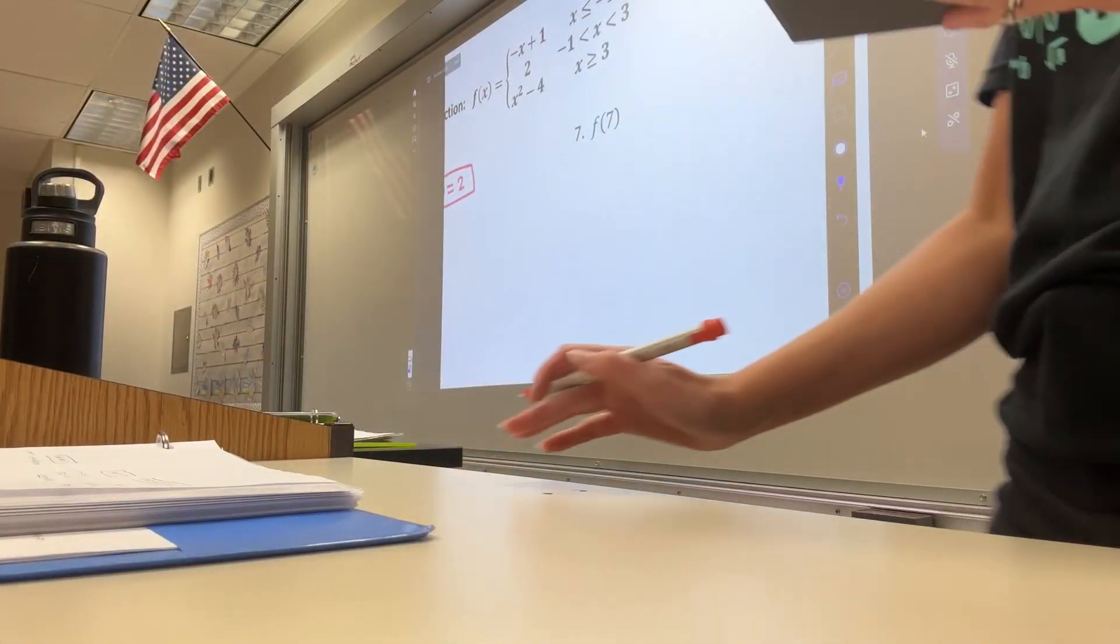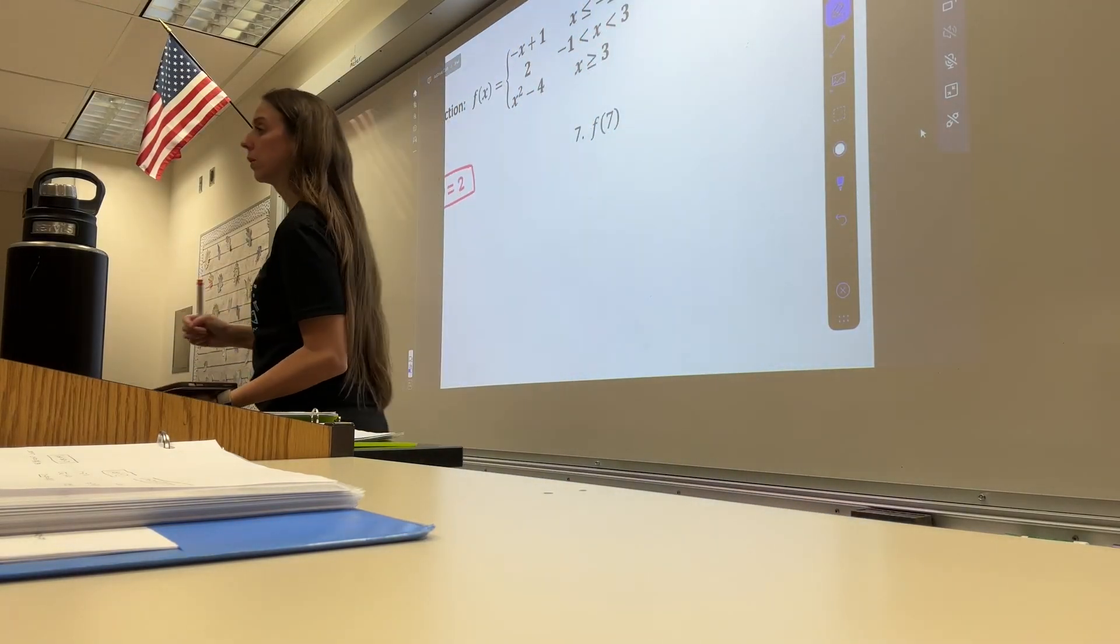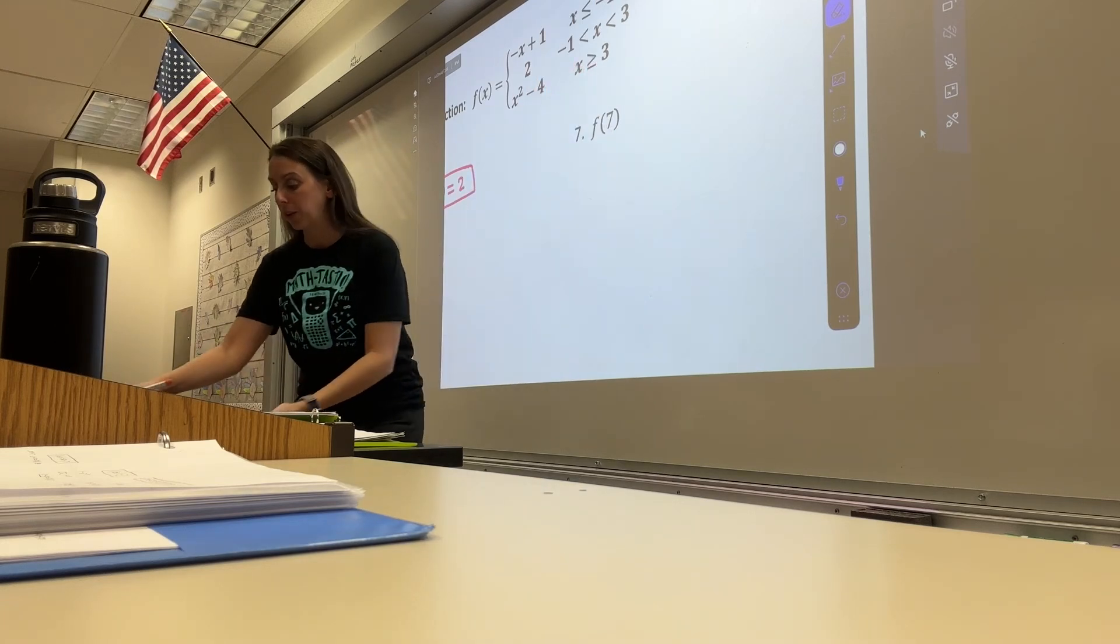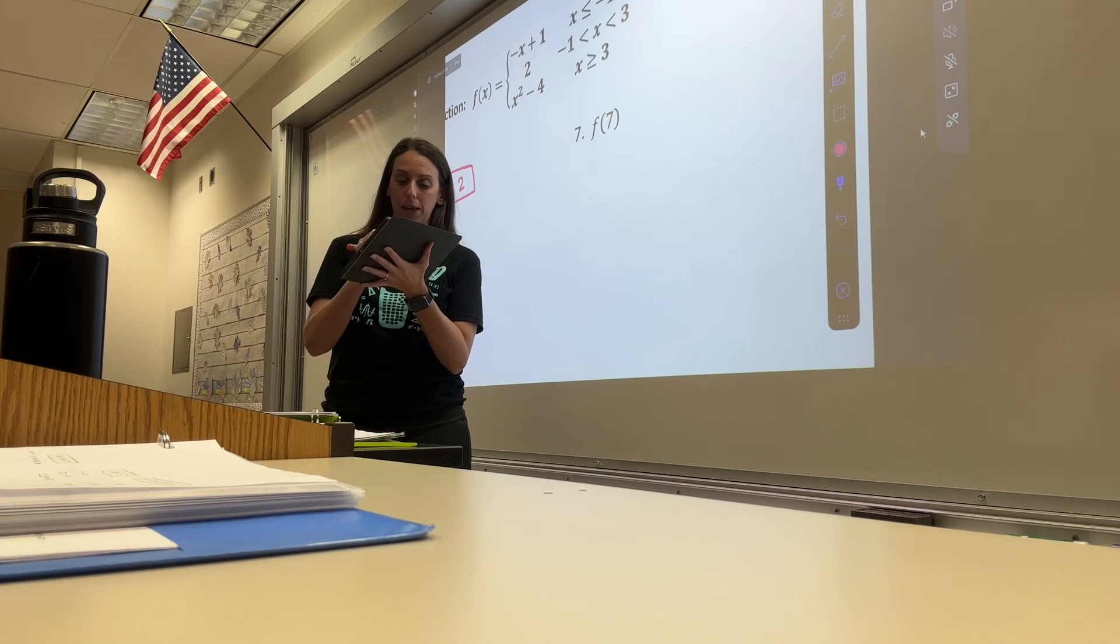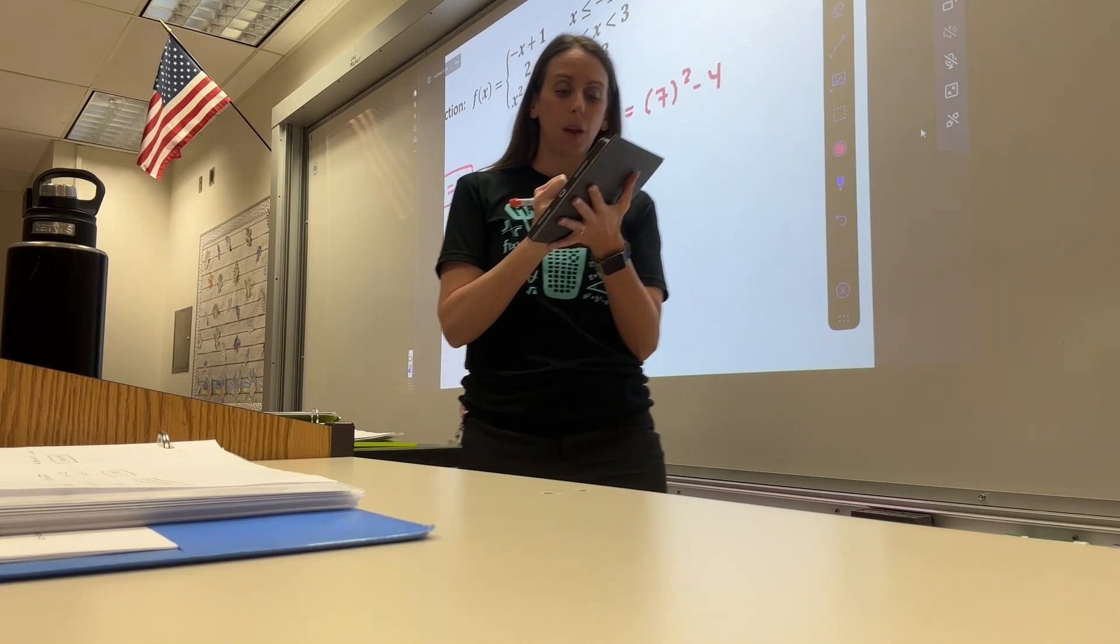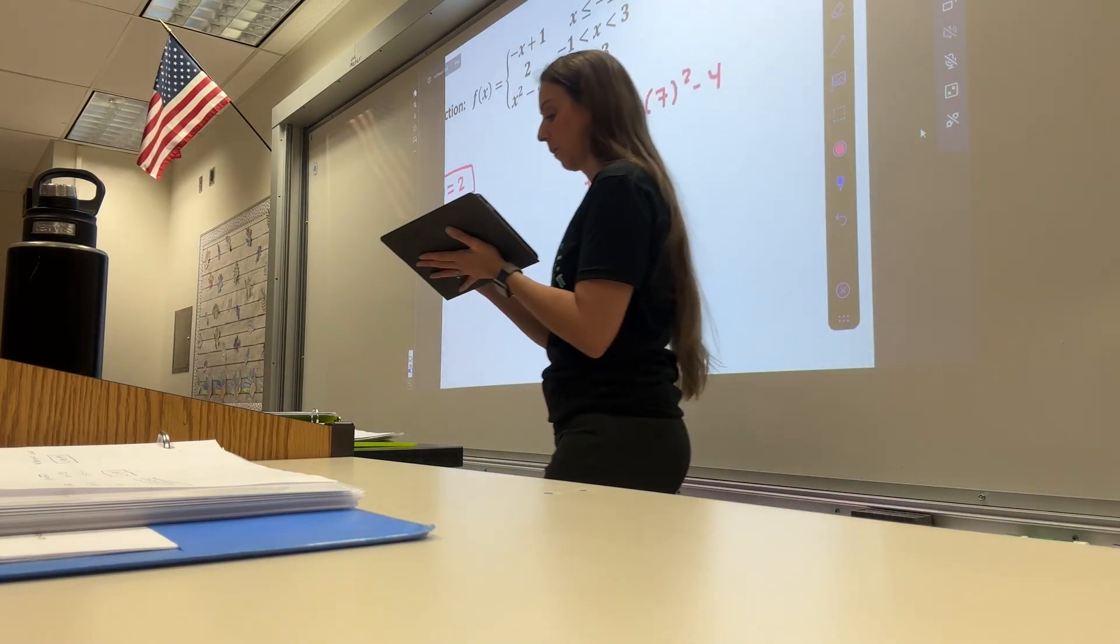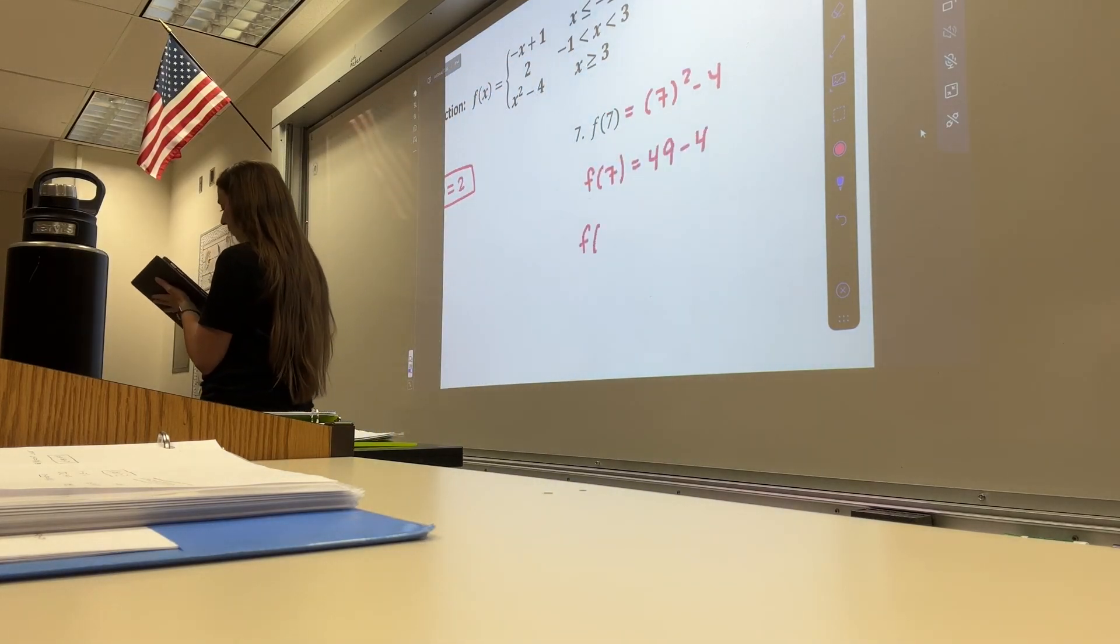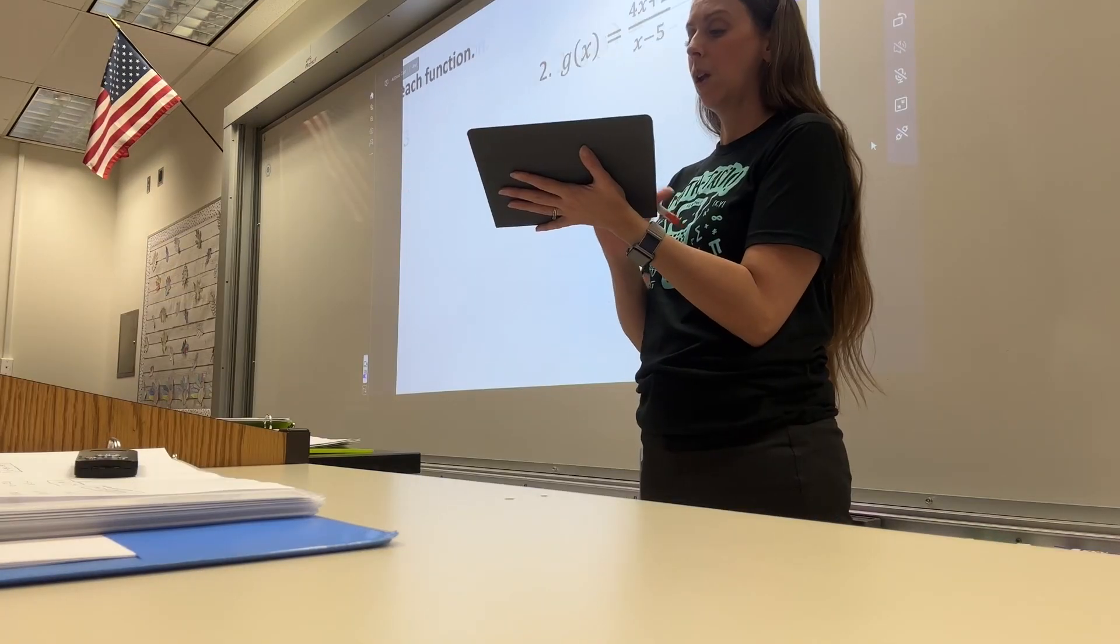We do this problem. Which function are we going to use? The first, the second, or the third? The third. Good. The third, because if x is 7, 7 is going to be bigger than 3. So we would have f of 7 equals, with a pen, there we go, x equals, in parentheses, 7 squared minus 4. So bring down our f of 7 equals, so 7 squared is 49, 49 minus 4. So f of 7 equals, and I think everybody had the right answer.